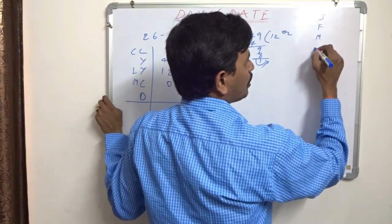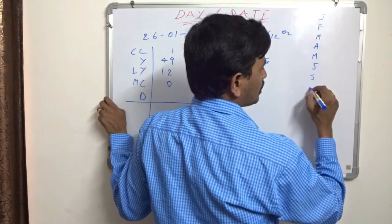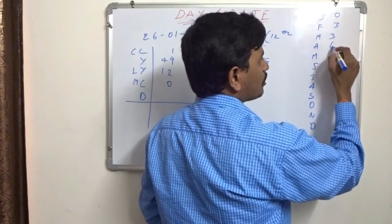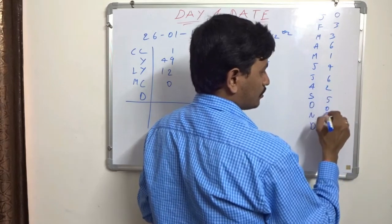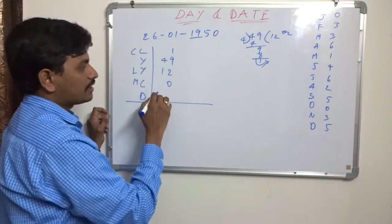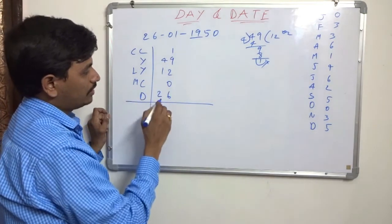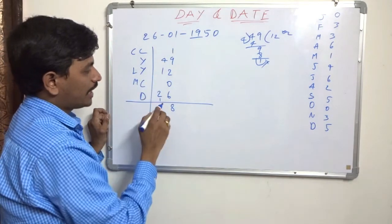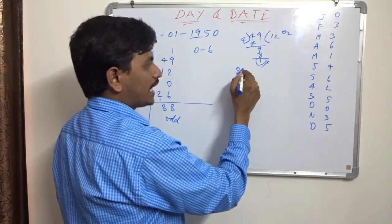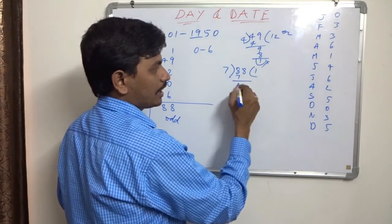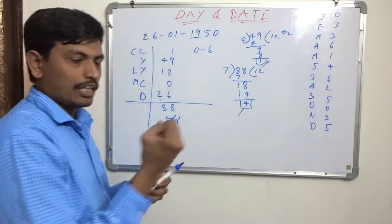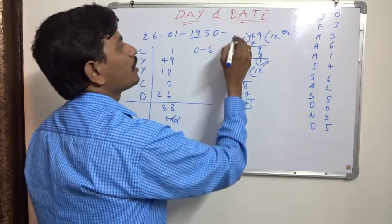January to December codes are: 0, 3, 3, 6, 1, 4, 6, 2, 5, 0, 3, 5. January code is 0. The date is 26. Adding: century code 1 + year 49 + leap years 12 + month code 0 + date 26 = 88 odd days. 88 must be divided by 7. 7 × 12 = 84, remainder is 4.